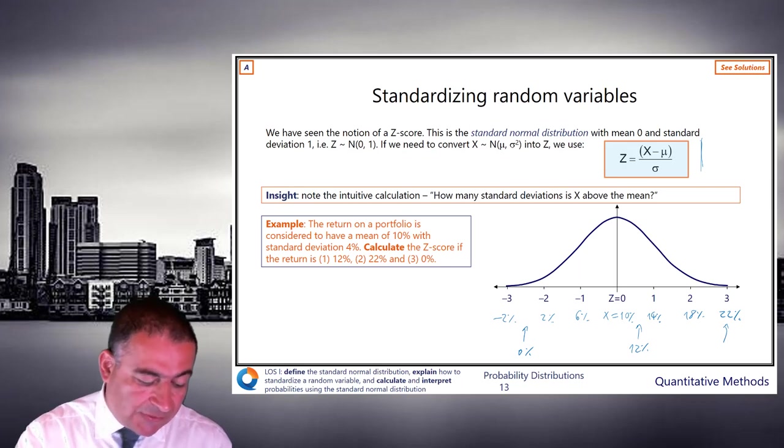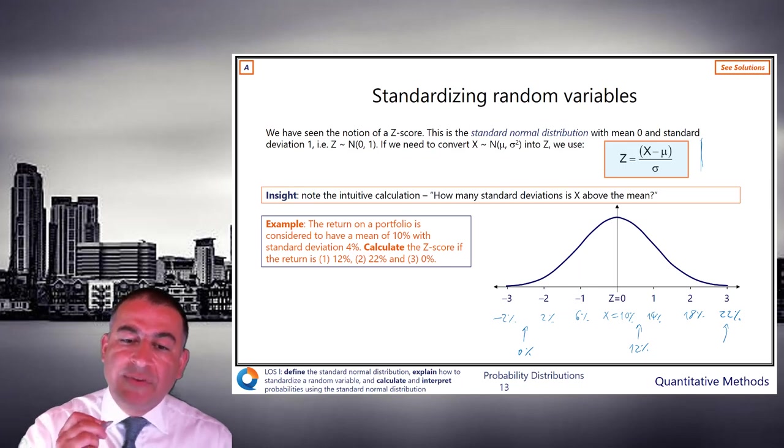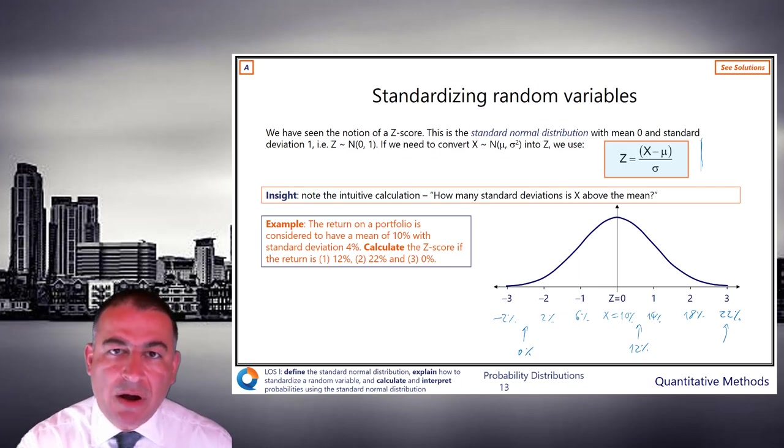So you may be able to see the z-score of 12 is going to be halfway between z equals 0 and 1, so that's going to be half. Z-score of 22, you can already see, is 3. And z-score of 0 is halfway between minus 2 and minus 3, so it's minus 2 and a half.